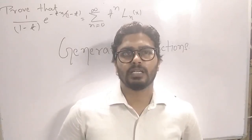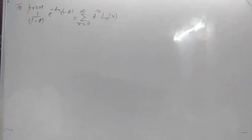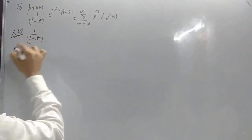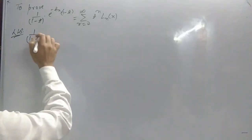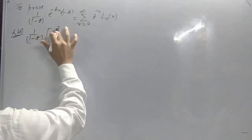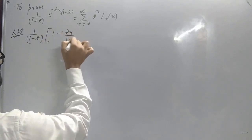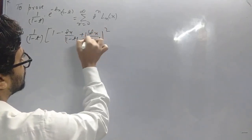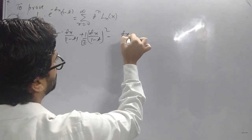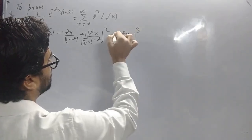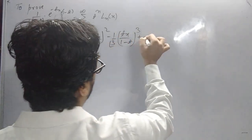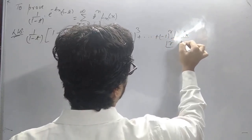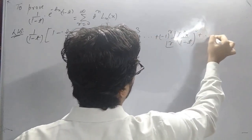Continuing with the proof of generating functions, we proceed with the LHS. What do we get? 1 upon (1 minus t), and this is e to the power x. So the expansion of e to the power x is 1 plus x plus x squared upon factorial 2 plus x cubed upon factorial 3 and so on. The general term is minus 1 to the power r, times 1 upon r factorial, times (tx) upon (1 minus t) to the power r, and so on.